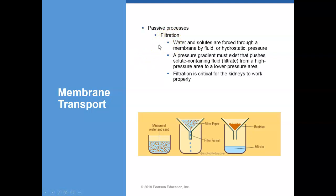Then we have filtration. Filtration occurs when water and solutes are forced through a membrane. Think of it as a bulk flow — lots of materials moving rapidly. As water moves, solutes move with it. Like filtering a mixture of water and sand: anything small enough to fit through the filter passes through, while sand stays behind. Filtration allows materials to move from higher to lower concentration using water as a pressure gradient.